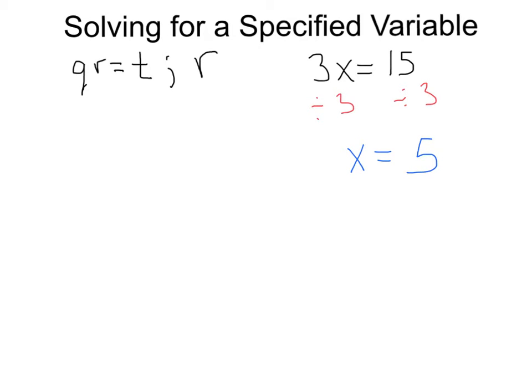Now, the problem back over here on the left with no numbers, we're solving for r. Think of this qr just like this 3x. This q, even though it's a letter, is just another number multiplying to r. So, since we have q times r, we want to get rid of that q to get r by itself. So, we just divide by q, divide by q to this side, just like we divided by 3 on this side.